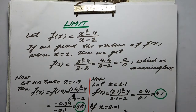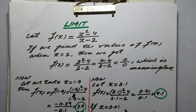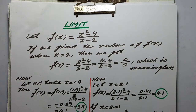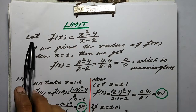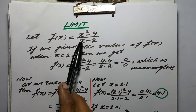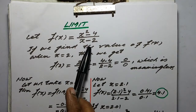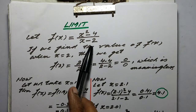Today I'm going to explain the concept of limit. Let f(x) be equal to x squared minus 4 upon x minus 2.